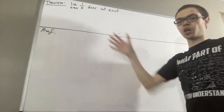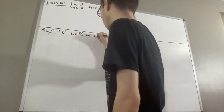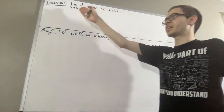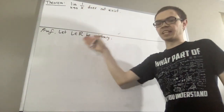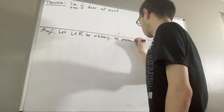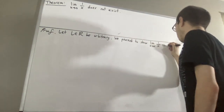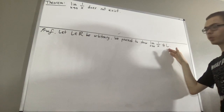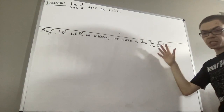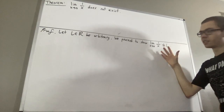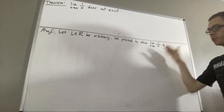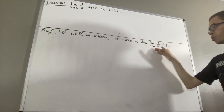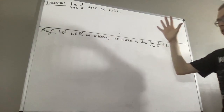Let's give ourselves an arbitrary real number L. From here, we proceed to show that the limit as x approaches 0 of 1 over x is not equal to L. To show this, we are going to use the negation of the definition of a limit.